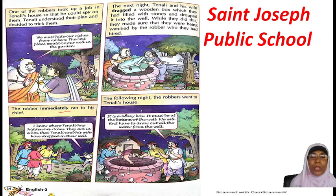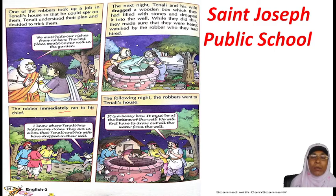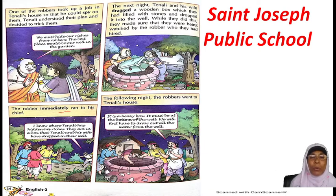The following night, the robbers went to Tenali's house. The chief of the robbers said: 'It is a heavy box. It must be at the bottom of the well. We will first have to draw out all the water from the well.' The chief gave orders — they knew it was a big, heavy box so it must have sunk to the bottom, and they decided to drain all the water from the well before retrieving it.